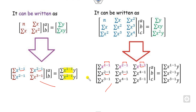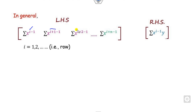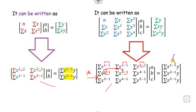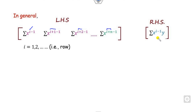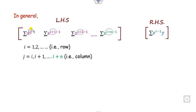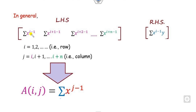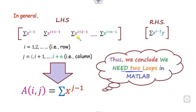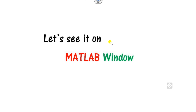If you think about the i-th row, starting with i the next value will be i plus 1, then i plus 2. So I can write it as i, i plus 1, i plus 2, and the last one is i plus n. On the right-hand side, this is nothing but i minus 1 of Y. Here i is my number of rows and j is my column index. Each individual element can be written as the summation of X raised to power j minus 1. This means we need two loops when writing the equation in MATLAB.